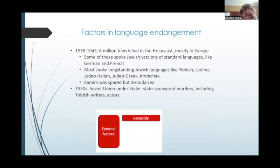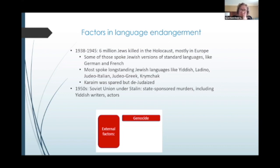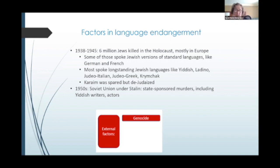Obviously, when you move to a new place, you are likely to lose your ancestral language within a few generations. Another external factor is genocide. In the case of Jews, the Nazi Holocaust from 1938 to 1945 killed many, many people, including 6 million Jews, mostly in Europe. Some of those spoke Jewish versions of standard languages like German and French, but most of the Jews killed spoke long-standing Jewish languages like Yiddish, Ladino, Judeo-Italian, Judeo-Greek, and Krimchak. The Karaim Turkic language was primarily spared because the community convinced the Nazis they were not Jews, but their language was very much de-Judaized during this period. Then in the 1950s in the Soviet Union under Stalin, there were state-sponsored murders of Jews, including targeting Yiddish writers and actors.